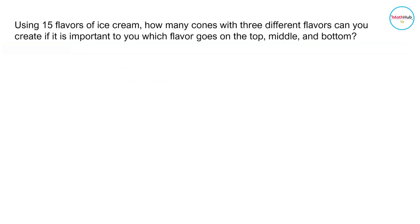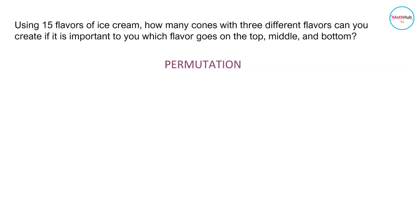Using 15 flavors of ice cream, how many cones with three different flavors can you create if it is important which flavor goes on top, middle, and bottom? Here we can see that order matters, therefore this is a problem on permutation. We use the permutation formula with 15 flavors taken 3.